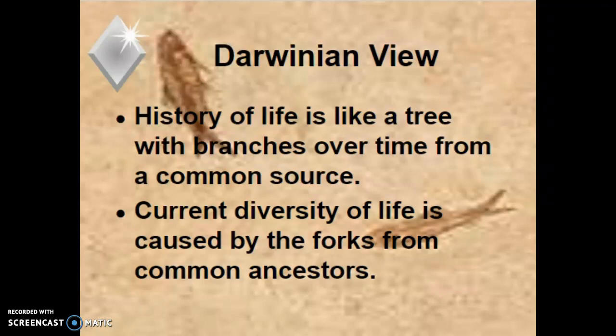The Darwinian view says the history of life is like a tree. Over time, we all come from the trunk of the tree, and over time the organisms branch off and become a little bit more different. We don't completely lose those characteristics, but we gain some new ones.